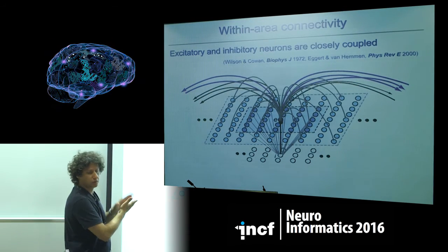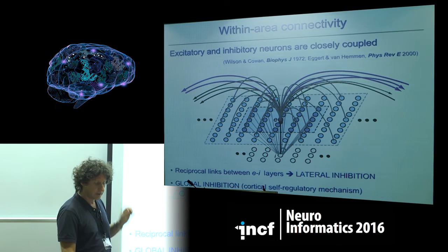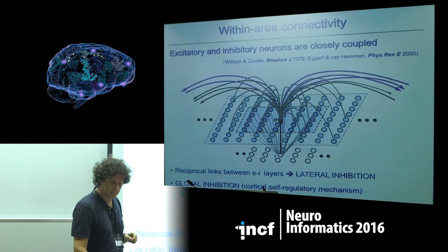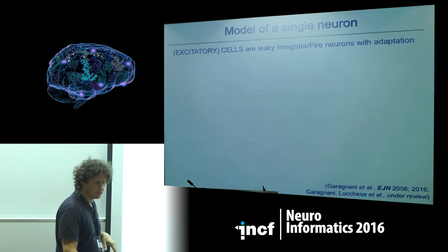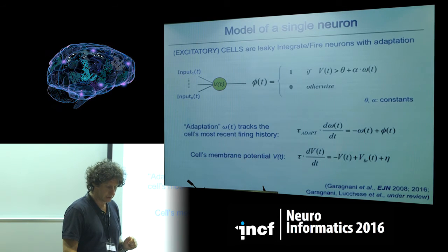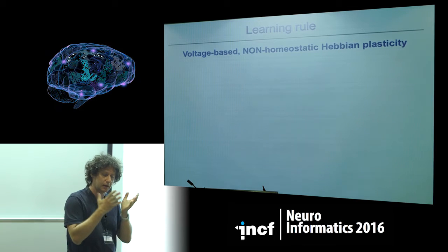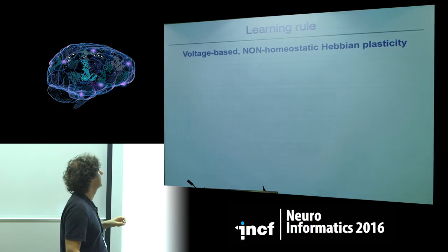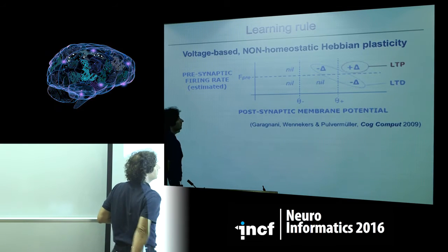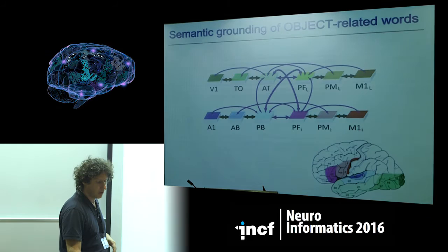The two layers of excitatory and inhibitory cells implement lateral inhibition. There are also global inhibition circuits regulating total activity within the network. The single neuron model is a leaky integrate-and-fire neuron with adaptation. The learning rule is voltage-based, non-homeostatic Hebbian plasticity with two thresholds for the postsynaptic membrane potential and one for the presynaptic firing rate, based on the LTP-LTD model of Artola and Singer. Synaptic changes are applied only when there is a pre- or postsynaptic spike — it is voltage-based but spike-driven.